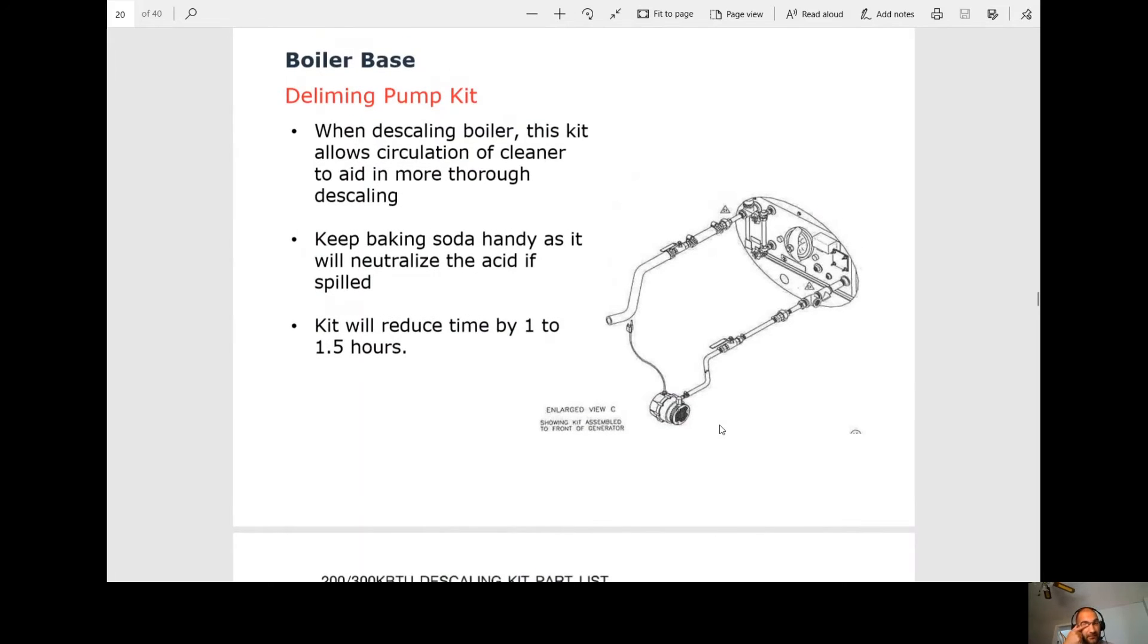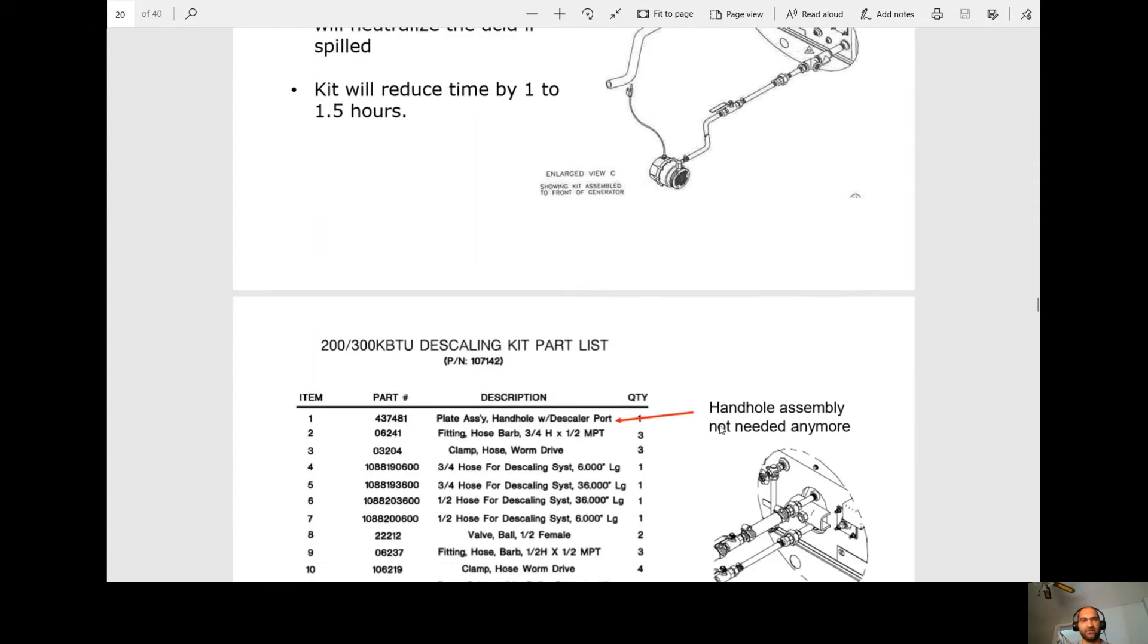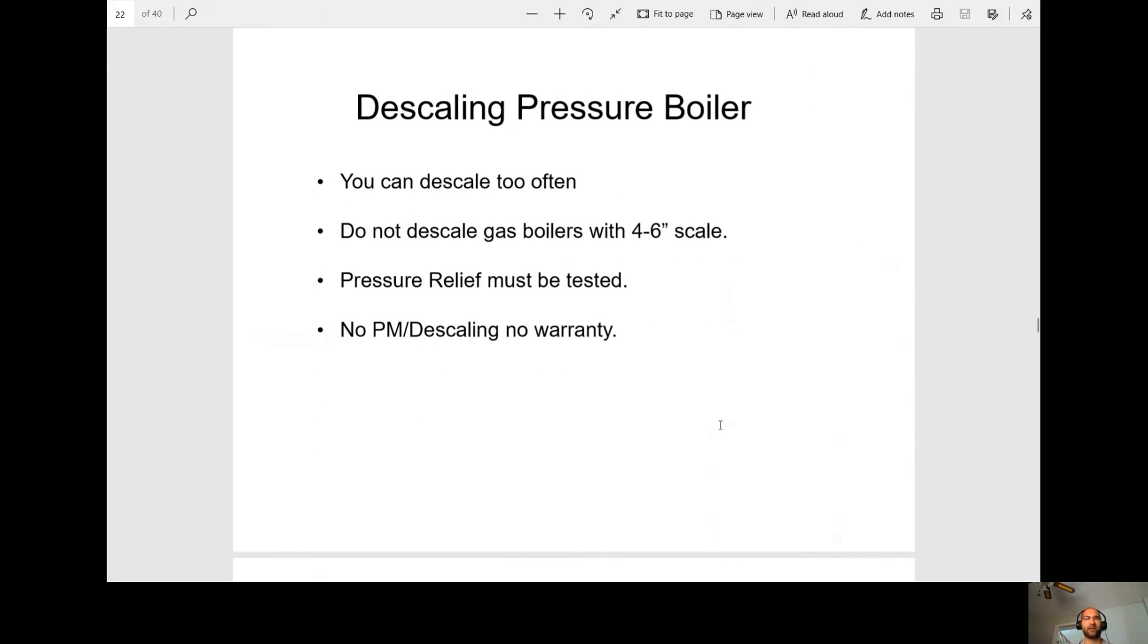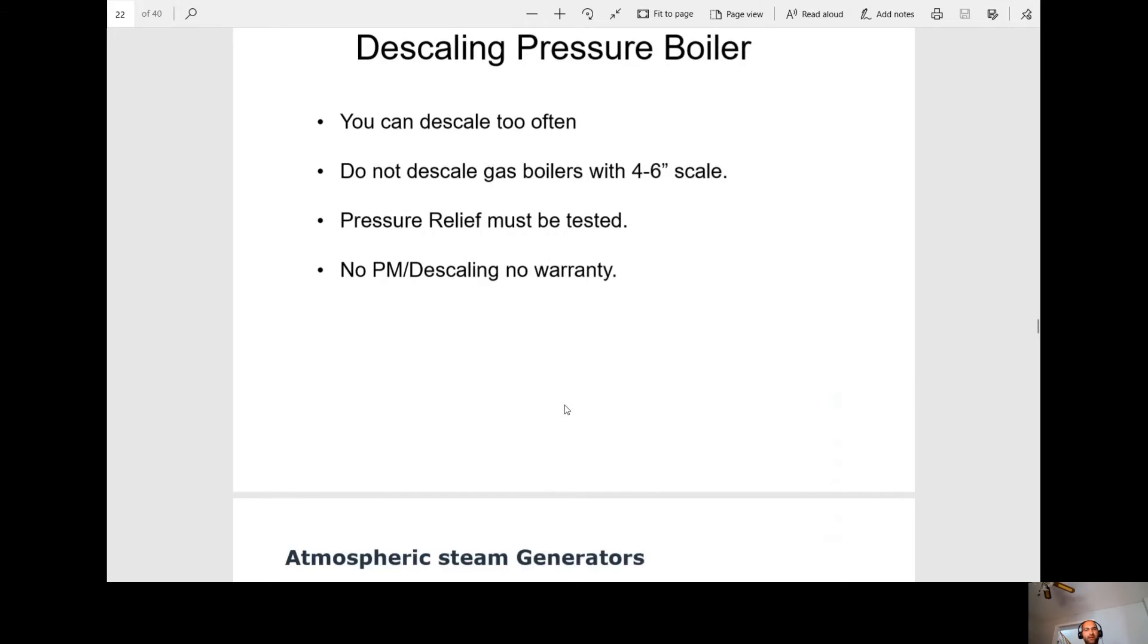Here they discuss a deliming pump kit just to make things a little bit faster. It's not something that we utilize. So just quickly, can you descale too often? Yes. The acids will attack the boiler walls. Any scale on a gas boiler, 4 to 6 inches thick, do not remove the scale. It'll most likely start leaking because it's probably acting as an insulator in whatever cracks might be in there. Pressure relief valve must be tested after every descale. And if they haven't been doing any PMs or descaling, the warranty would be voided at that point.